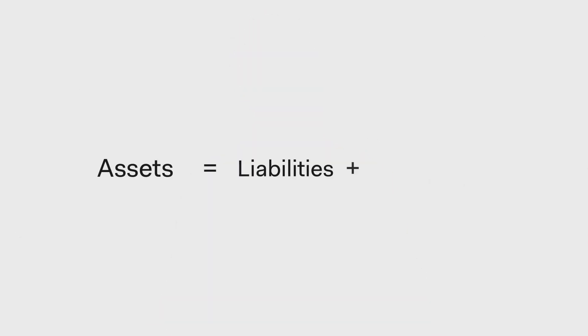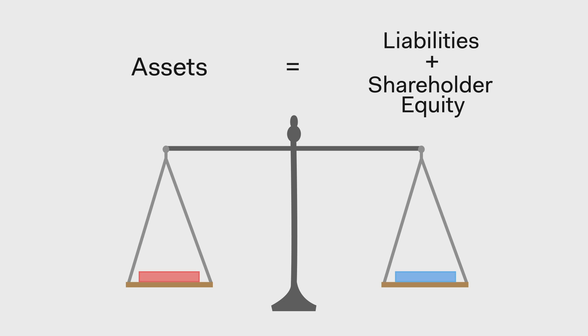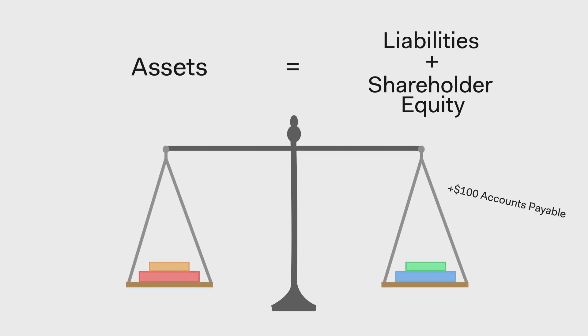A critical part of the balance sheet is that it must always balance. We do this with the equation: assets equal liabilities plus shareholder equity. Let's go over an example. Say we're a retailer and we purchase $100 of inventory, but we only pay our vendor every 30 days. In this situation, our inventory on the asset side of the balance sheet would go up by $100. But on the liabilities side, we need to increase accounts payable by $100 to represent the money we owe our vendor in 30 days' time.